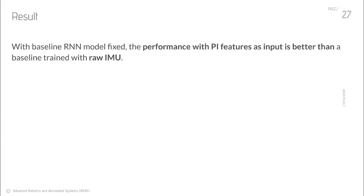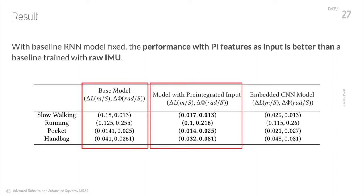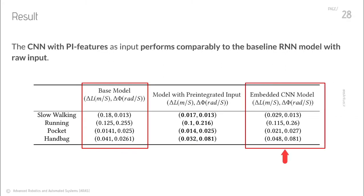Similar to the AV domain experiment, we observed significant training and inference speedup due to the shorter PI sequences compared to raw measurements. The model trained using PI features also outperformed the baseline trained on raw IMU data. Interestingly, the embedded implementation based on a highly constrained CNN model with stacked PI features as input performs comparably to the baseline IONet trained using raw IMU samples. Furthermore, because of the temporal compression of the PI features, a shallow CNN with small kernel sizes is able to attend to a larger signal receptive field, which further improves computational efficiency and helps with learning dynamics.